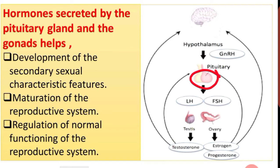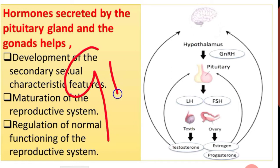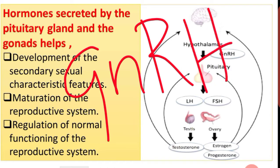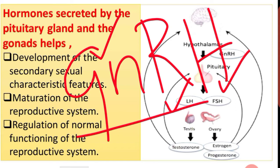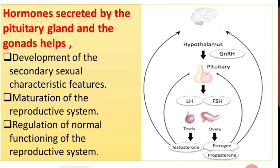Hypothalamus secretes gonadotrophic releasing hormone, abbreviated as GnRH. This gonadotrophic releasing hormone stimulates the anterior pituitary, that is the adenohypophysis, to secrete hormones.